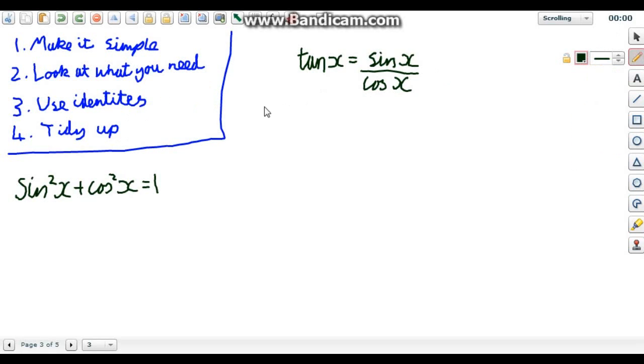You will obviously need to remember the two trig identities. Tan is equal to sine over cos. And sine squared plus cos squared equals one. If you can't remember them, there's no easy way about it. You literally just have to sit down and keep reading them over until you do remember them.